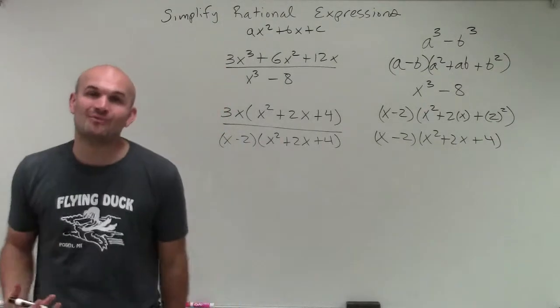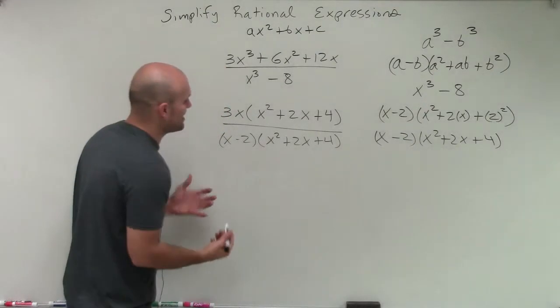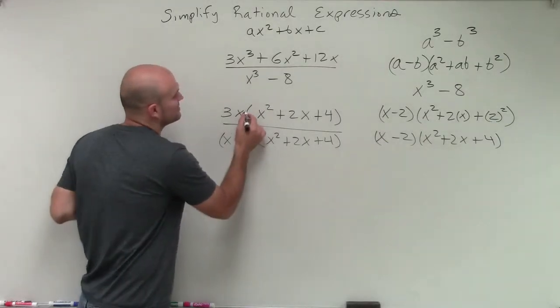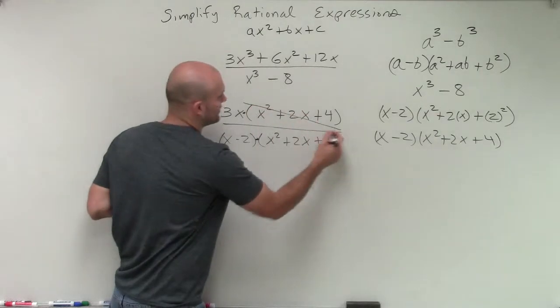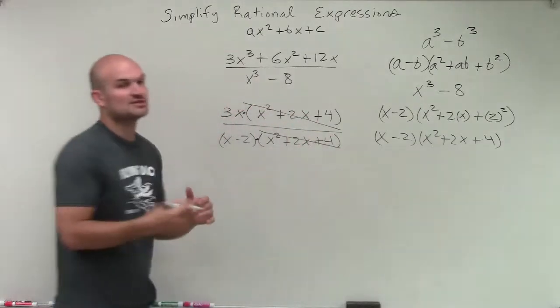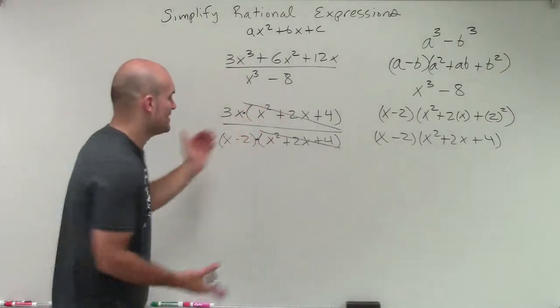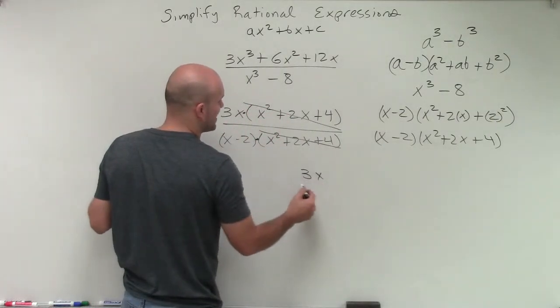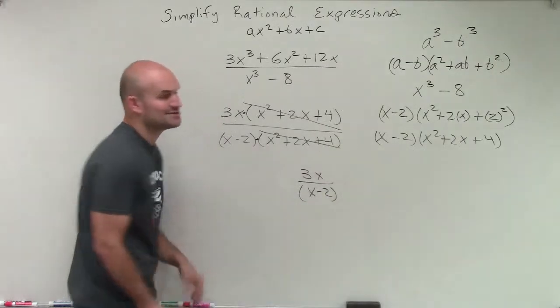Well, what do you know? Lo and behold, this huge complicated problem has actually done us a great favor, because since this is distributed across multiplication, I know I can just separate these and say, all right, well, this is being divided by that, which is going to leave us with 1. So we don't need to keep those up there. We can just multiply our final version of our simplified rational expression, which will be 3x divided by x minus 2.